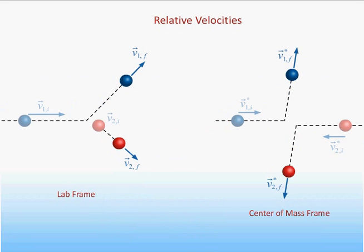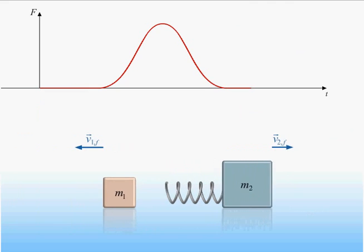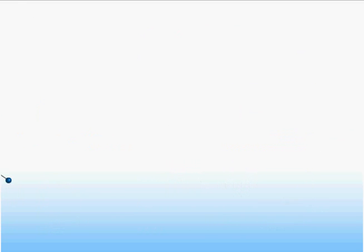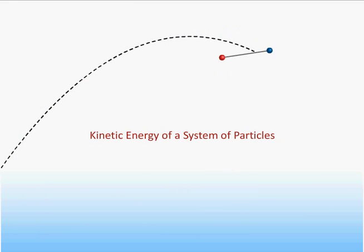In particular, we will start by developing a useful relation between the relative velocities that must hold in an elastic collision. We will then look at the details of the collision process and introduce the concept of the impulse that describes the change in momentum of one of the objects in a collision. Finally, we will investigate the kinetic energy of a system of particles and will find that the total kinetic energy can be expressed as the sum of the kinetic energy of the center of mass and the kinetic energy of the particles relative to the center of mass.